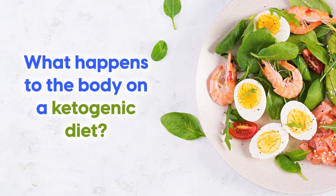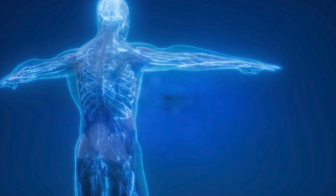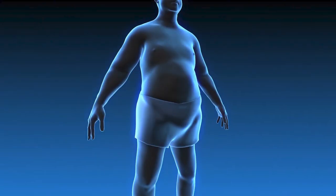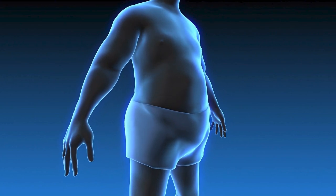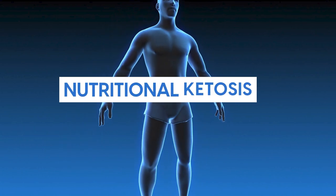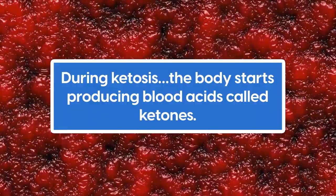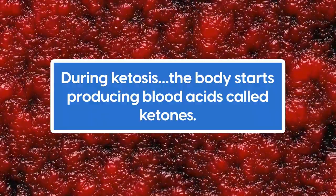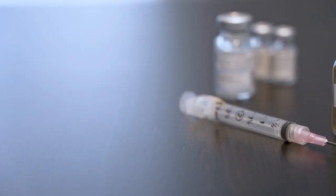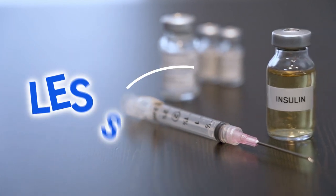So what happens to the body on a ketogenic diet? Well, when you start keto, your body quickly runs out of glucose to burn after a few days. And as a result, it taps into stored fat for energy by activating a cellular process called nutritional ketosis. During ketosis, the body starts producing blood acids called ketones. If you have insulin resistance, ketones make it so that your body needs to make and use less insulin.